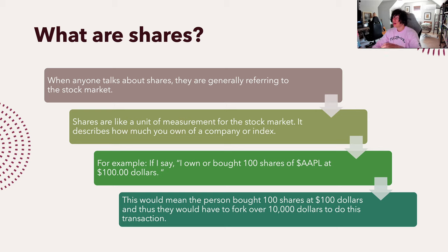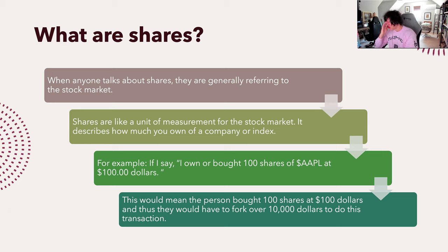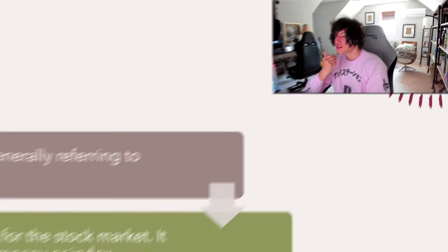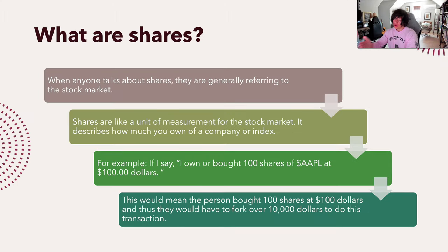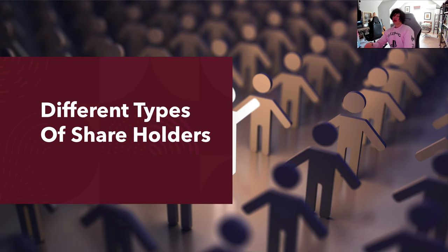One thing to keep in mind: if you buy $10,000 worth of Apple in this example, you can't actually lose more than $10,000. If the stock goes to zero, the worst that can happen is you lose $10,000 — and that's different from shorting, which we'll cover in the future. If you're trading a $1 stock and you buy 100 shares, it's $100 you have to fork over.